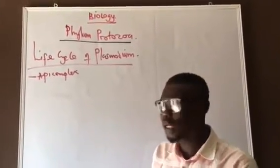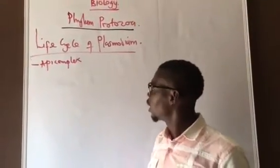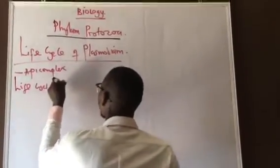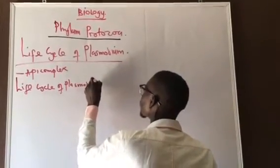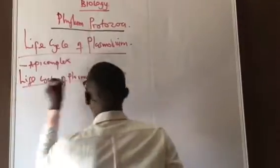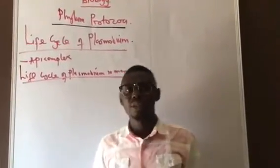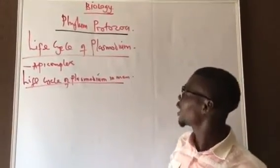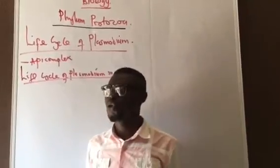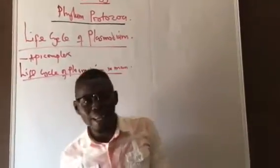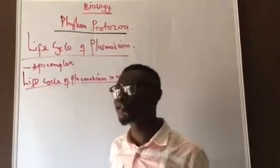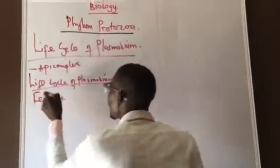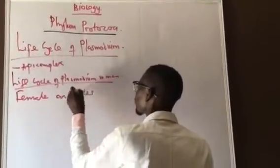In man, Plasmodium carries out its asexual reproduction, whereas in the mosquito it carries out its sexual reproduction. When an infected mosquito bites man, it is specifically the female Anopheles mosquito that carries Plasmodium — not all mosquitoes carry Plasmodium.